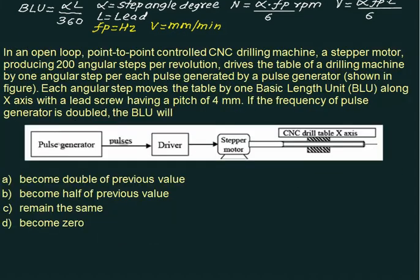In this question, we are given this figure here, an open loop point-to-point control CNC machine. Producing 200 angular steps per revolution drives the table. One angular step pulse generated. Each angular step moves by one basic unit length along the x-axis. If the frequency of the pulse generator is doubled, will the BLU change or not? That is the question.